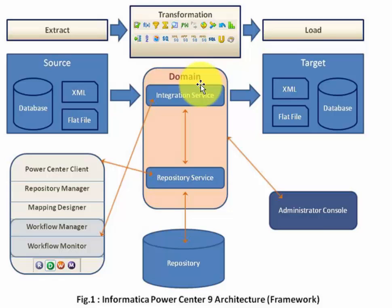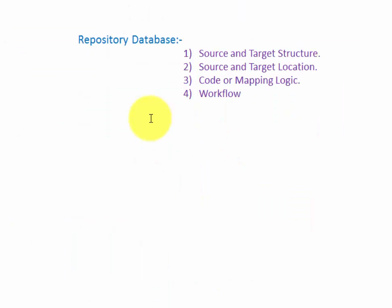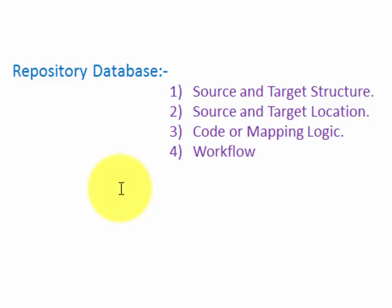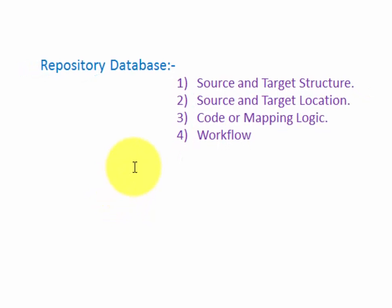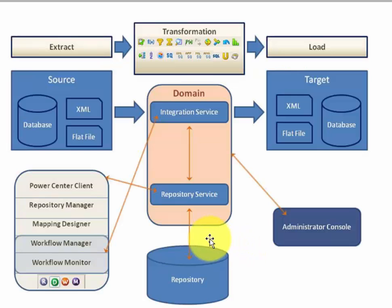I am going to explain the functionality of repository database, repository service, and integration service, along with nodes. Repository database contains metadata of everything — metadata means data about data. It stores source and target structure, source and target location, and code or mapping logic. Whatever mapping you create using Designer is stored in the repository database. Similarly, workflows created in Workflow Manager are also stored in the repository database. Virtually all objects apart from services are stored in the repository database. Repository database is the heart of PowerCenter architecture. You cannot directly read from or write into the repository database.